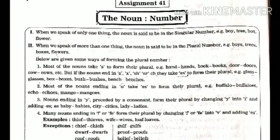Second: most of the nouns ending in 'o' take 'es' to form their plural. Any noun that ends in 'o' also gets 'es' added at the back. For example: buffalo → buffaloes, echo → echoes, mango → mangoes. So nouns ending in 'o' also get 'es' added.